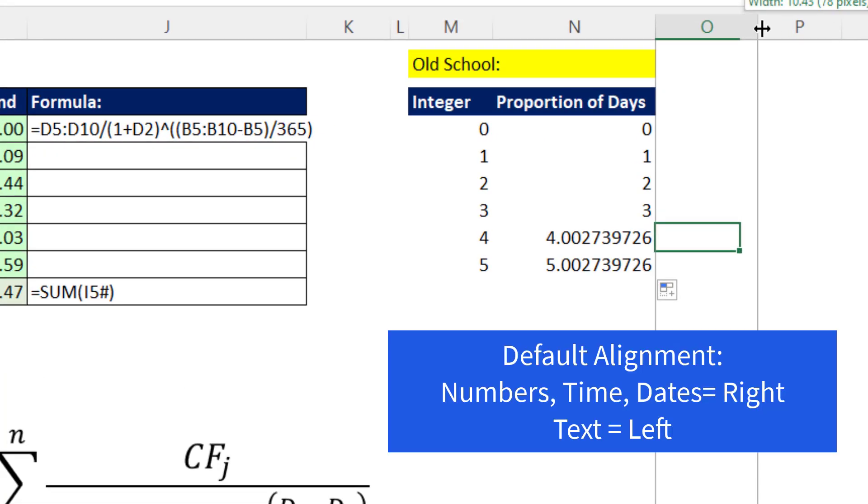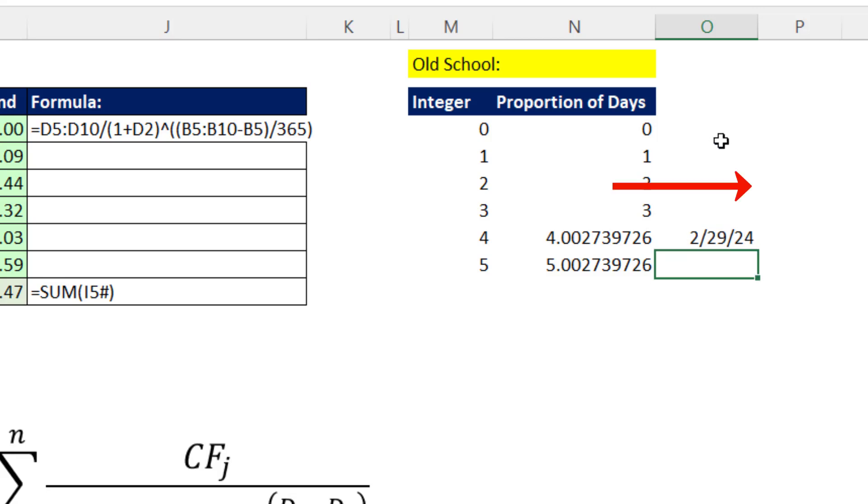I'm going to go with my knowledge of default alignment, 2 slash 29 slash 2024. When I hit Enter, if this is aligned to the right, I know it's a number. To the left, it's text. And that's aligned to the right, so I know it's a real date. And sure enough, in February, there's 29 days.